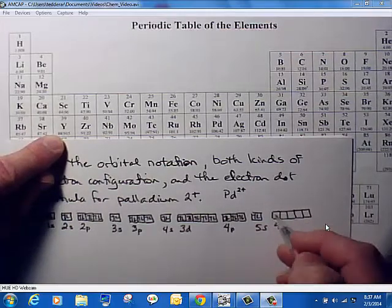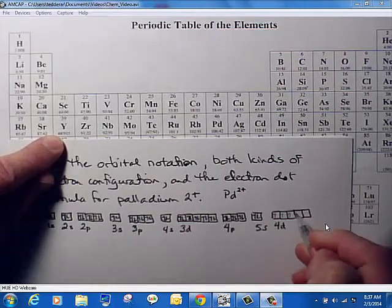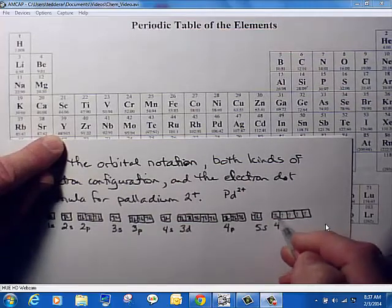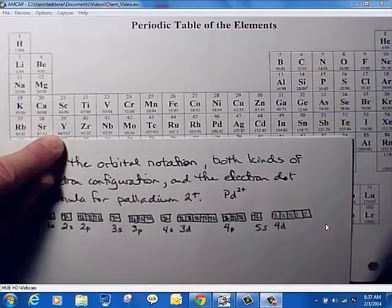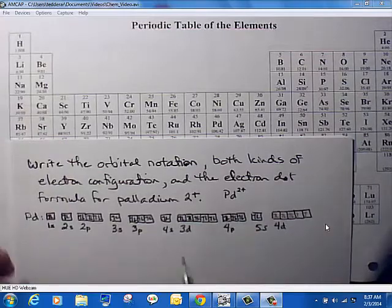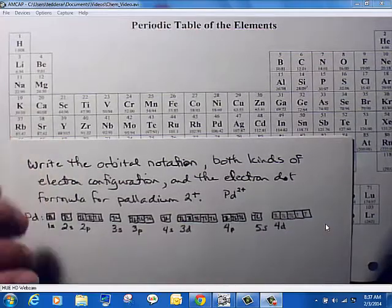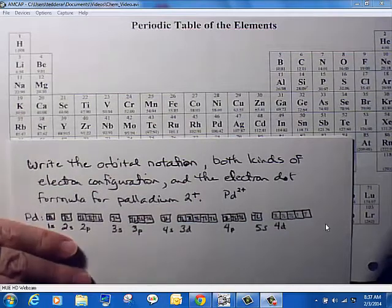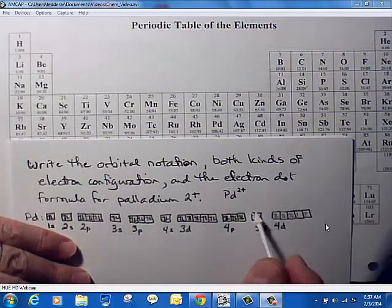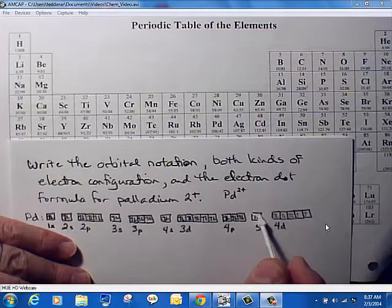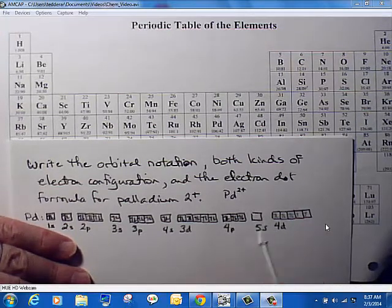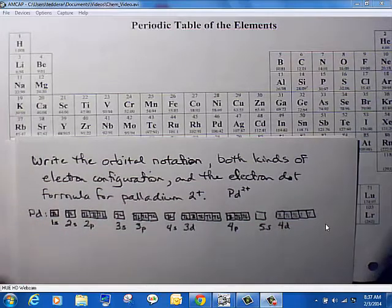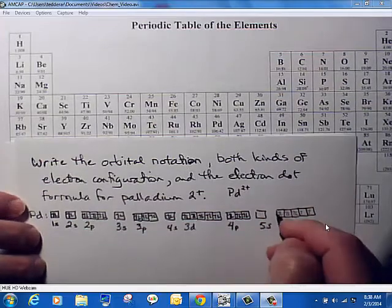So, I said 8 electrons for 4d. If we want 2 plus, we found out from the lab that we did that you can remove the electrons from the highest energy level first. Well, that's 5s, and I inadvertently used a pen there. I should have used a pencil so that I can erase it. So, I'm going to use my whiteout here to get rid of the 5s electrons, and that would be a 2 plus charge. If I'm getting rid of two electrons, we're going to have a 2 plus charge.